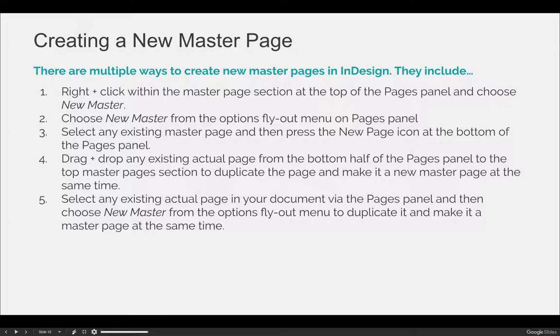If you were on page seven of your document and hit the new page button at the bottom right-hand corner of the pages panel, you would get a new page — it would become page eight. The same thing happens if you have a master page selected in the top section: since you're in the master pages section, you will create a new master page. You can also drag and drop any existing actual page from the bottom half of your pages panel to the master pages section, and it will create a new master page based on that page.